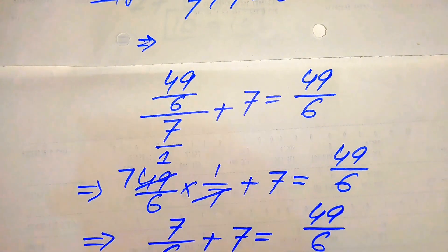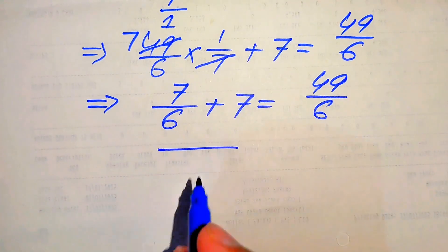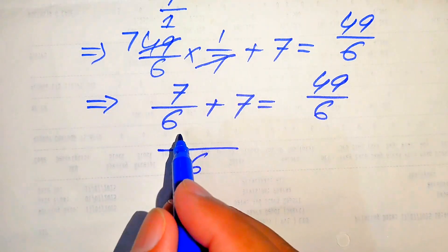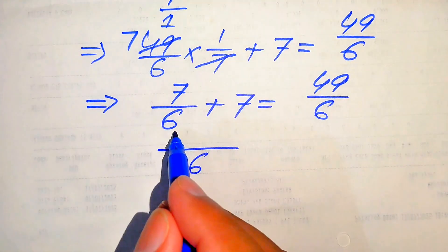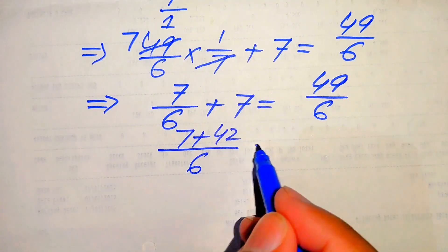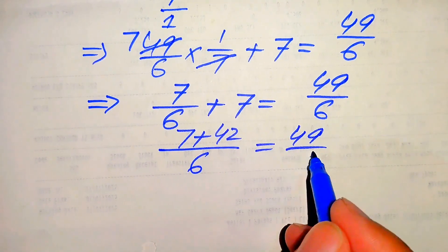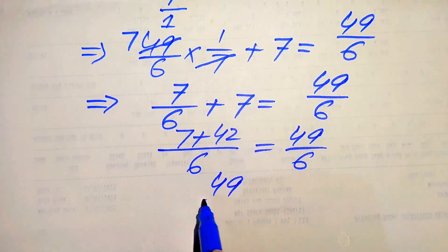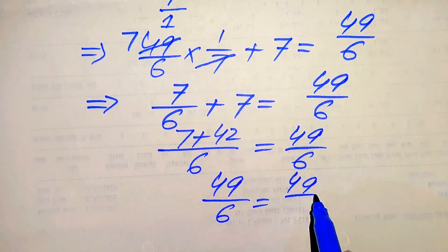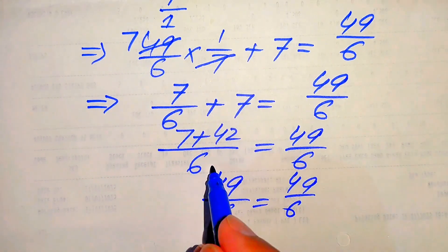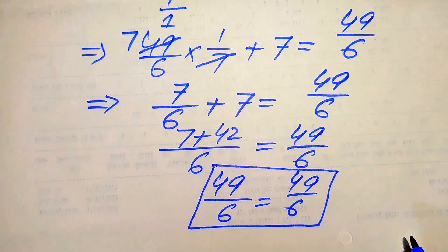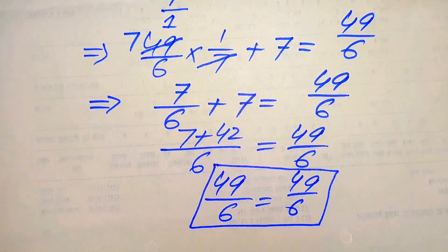We take the LCM of 6 for the left-hand side. The 6 cancels out, and we get 7 plus 42 over 6, which equals 49 over 6. Finally we get 49 over 6 equals 49 over 6. This confirms that the value of t equals 49 over 6 satisfies our given question statement, and this is our final answer.